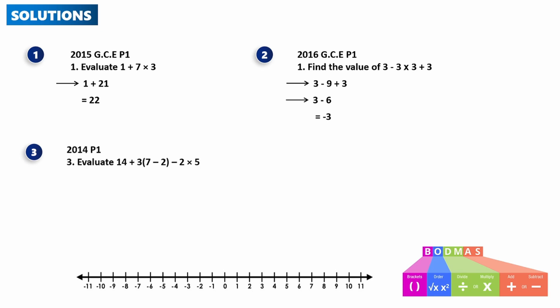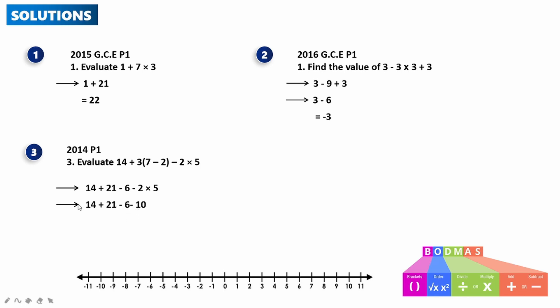Question 3, 2014 Paper 1: evaluate 14 plus 3(7 minus 2) minus 2 times 5. From BODMAS, start with the brackets: 3 times 7 is 21, 3 times negative 2 is minus 6. Step 1: 14 plus 21 minus 6 minus 2 times 5. Then multiply: minus 2 times 5 is minus 10. Step 2: 14 plus 21 minus 6 minus 10. Add 14 plus 21 to get 35 minus 6 minus 10. Minus 6 minus 10 is minus 16, so 35 minus 16 equals 19.